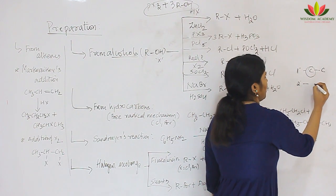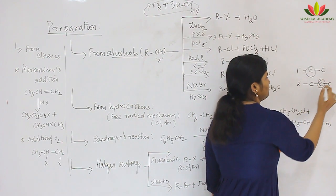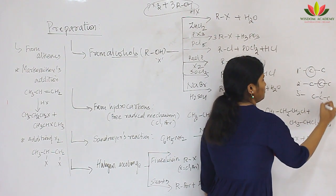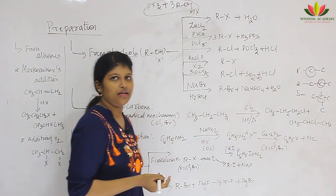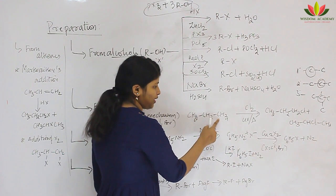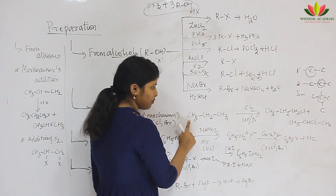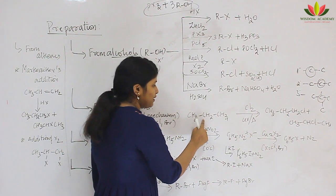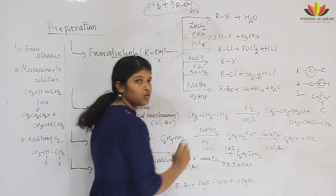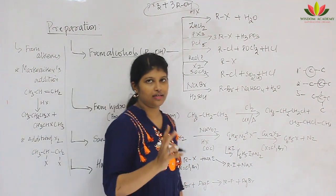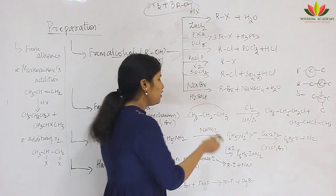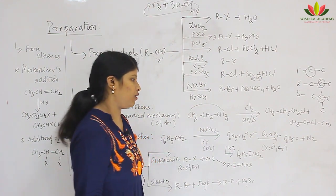Secondary carbon is attached to two carbons. Tertiary carbon is attached to three carbons. In a sample molecule, we may have primary carbons attached to one carbon, and a central secondary carbon attached to two carbon atoms. So we have two types of carbon environments: primary carbon and secondary carbon.